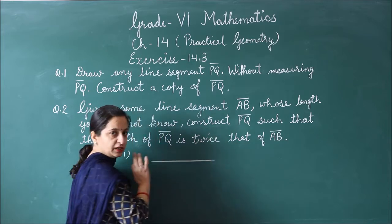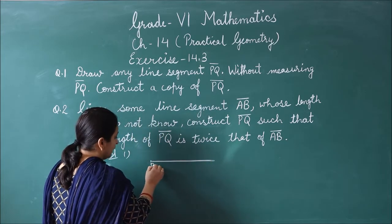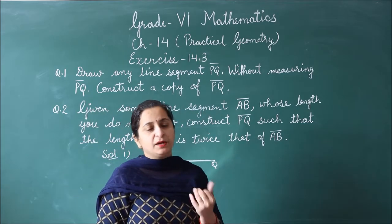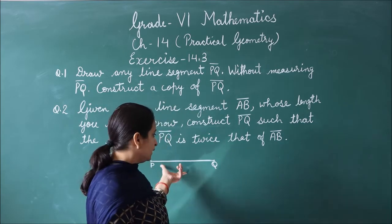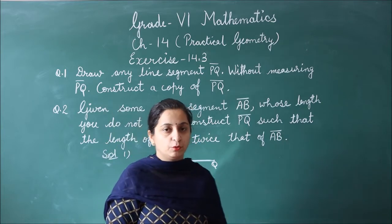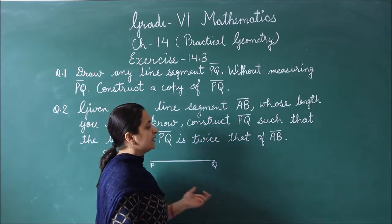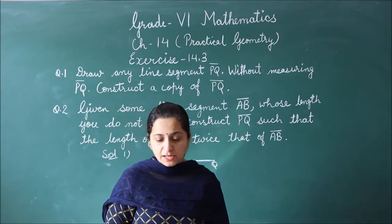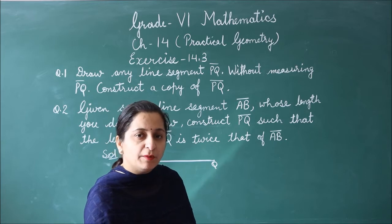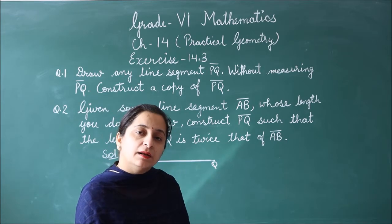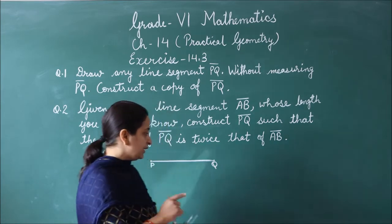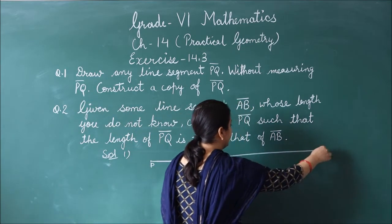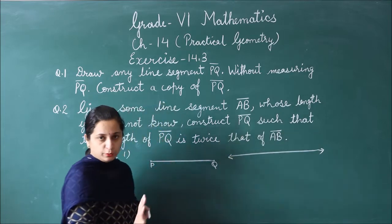I don't know how long this PQ is. I have drawn a line segment PQ. We have not measured it. But yes, with the help of a scale, we have drawn a straight line. Now I will just make an exact copy. Now I will not measure it. So what will I do here? I will use the compass again.